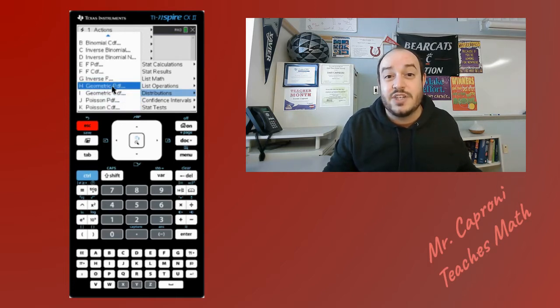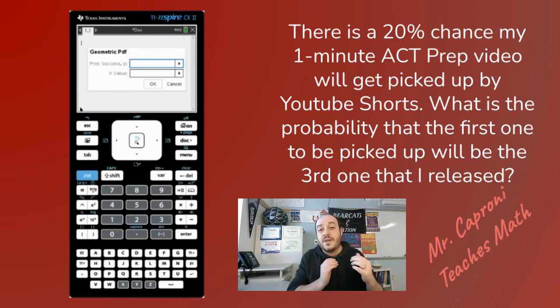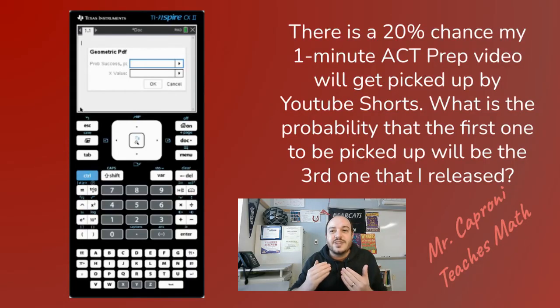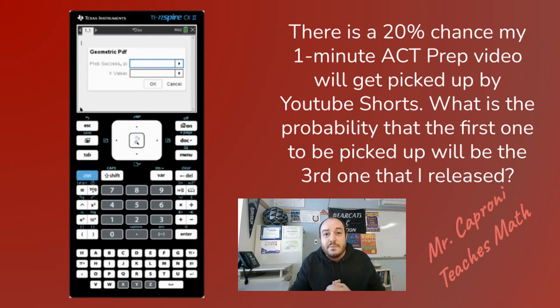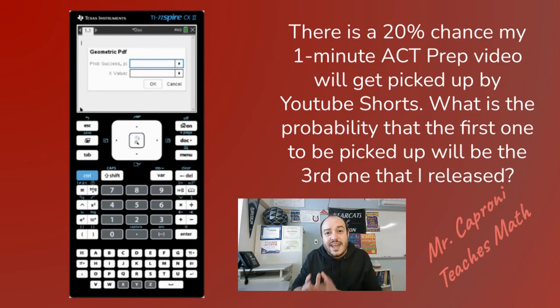Let's start with PDF and jump into our first example. There's a 20% chance of a one-minute ACT prep video getting picked up by YouTube Shorts. What's the probability that the first one picked up will be the third video released? PDF is when you're looking for one specific x value. On a geometric distribution you're finding how many attempts to the first success, so if the question asks about one individual number — in this case the third attempt — that's a PDF question.